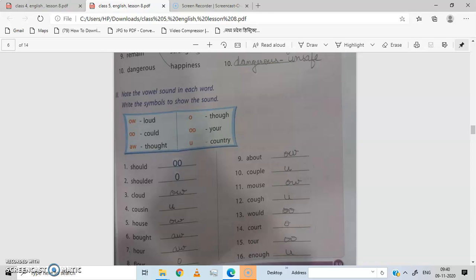Should has double O sound. Shoulder, show has O sound. Cloud has ow sound. Cousin has U sound. House has ow sound. What, again aw sound, not or. Raw has aw sound.